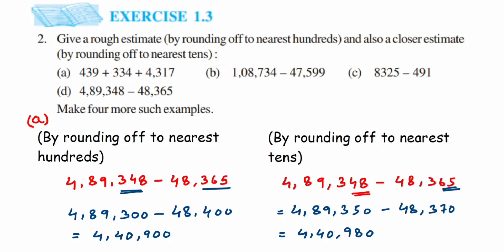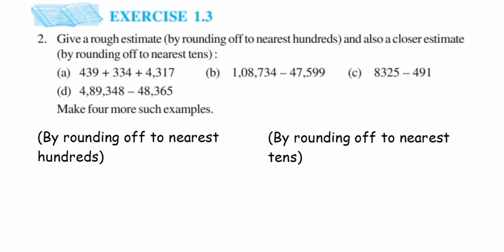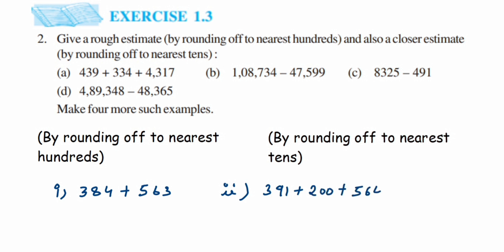We've done all four questions. The exercise also asks us to find four such examples on our own. I'll give you a couple: 384 + 563, and 391 + 200 + 564. You can take any simple numbers — three-digit or four-digit — and solve them yourself. I hope it's clear. If you have any questions or doubts, drop a comment below. Thank you for watching!